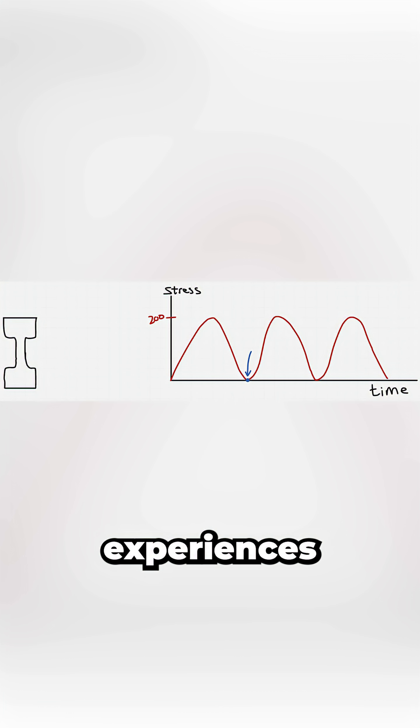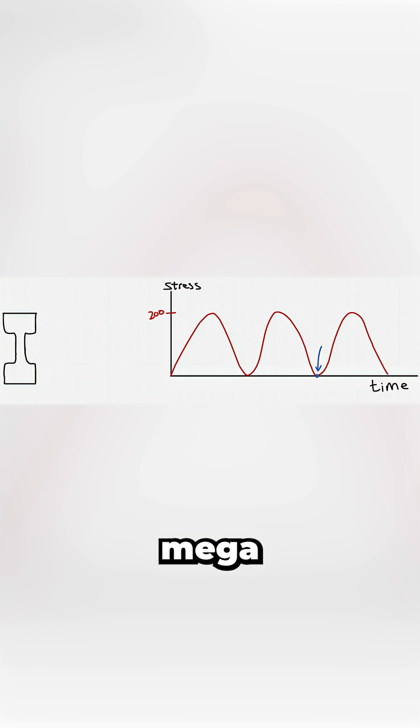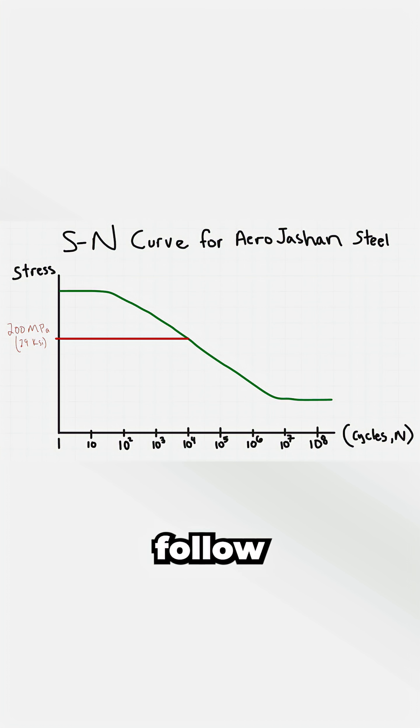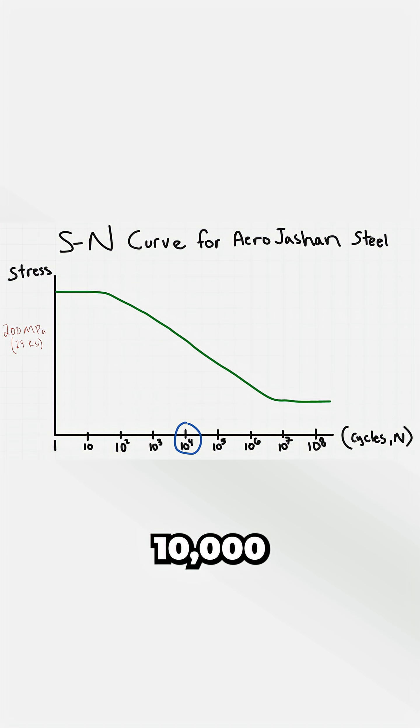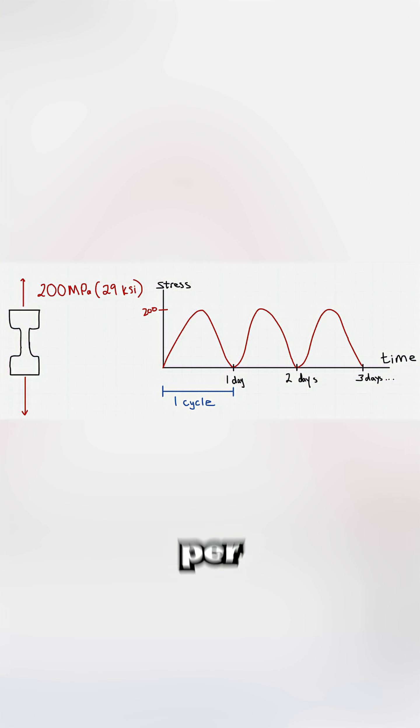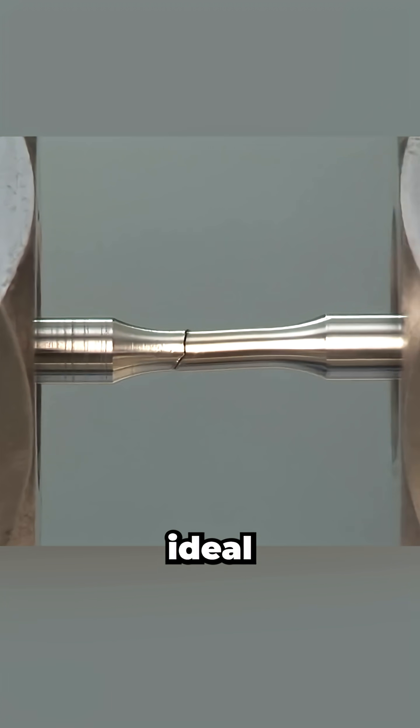Now let's say a part experiences a cyclic stress of 200 MPa. You find that point on the vertical axis, follow it horizontally to the curve, then drop vertically to find the number of cycles to failure. If that number is 10,000, and the part experiences one stress cycle per day, it's expected to fail roughly after 10,000 days, under ideal lab conditions.